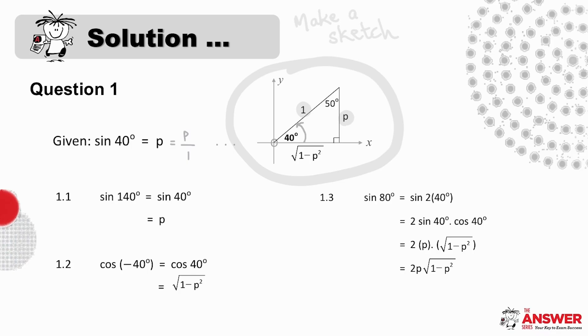If we read off the sketch, this is root 1 minus p squared over 1, which is just root 1 minus p squared. And then for 1.3, sine of 80 is already a ratio of a positive acute angle, but 80 isn't the acute angle from the question. So the important step here is to consider the relationship between 40 and 80. 80 is double 40, and so sine of 80 can be written as sine of 2 times 40. This double angle can then expand to 2 sine 40 cos 40, and then at this point we can find sine 40 and cos 40 ratio values either by using the sketch or from the answers we got to 1.1 and 1.2. This here is then the final answer for 1.3.